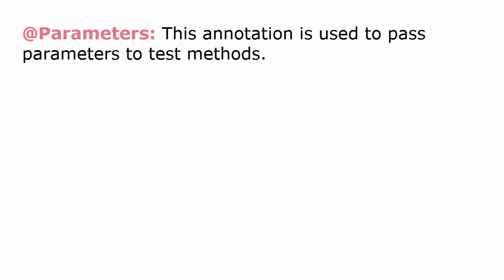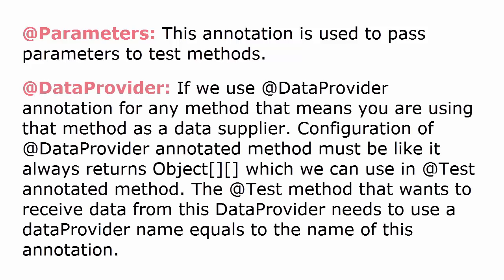In the next tutorial you can see @Parameters annotation in detail with a practical example. For @DataProvider annotation also, I have given a detailed explanation with a practical program, so here in this tutorial we will just confine ourselves with the definition. If we use @DataProvider annotation for any method, that means you are using that method as a data supplier. The configuration of a @DataProvider annotated method must be such that it always returns an object which we can use in the @Test annotated method. The @Test method that wants to receive data from this data provider needs to use a data provider name equal to the name of this annotation. See my next tutorial about @DataProvider to understand it clearly.